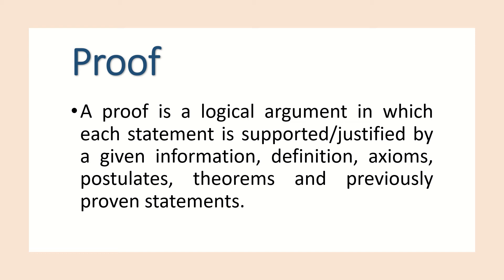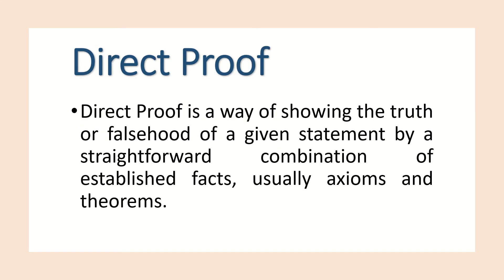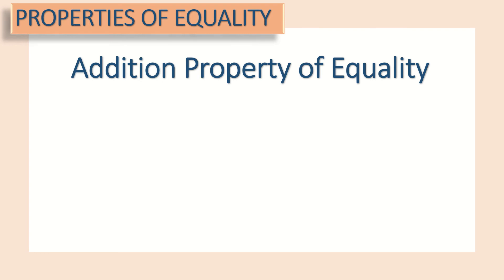Next, we have postulate: a postulate is a statement that is accepted without proof. Next, the theorem: a theorem is a statement accepted after it is proven deductively. Direct proof is a way of showing the truth or falsehood of a given statement by a straightforward combination of established facts, usually axioms and theorems. In writing a proof, it is important to master the properties of equality and congruence, as these are used as the basis for reasons in writing proofs.